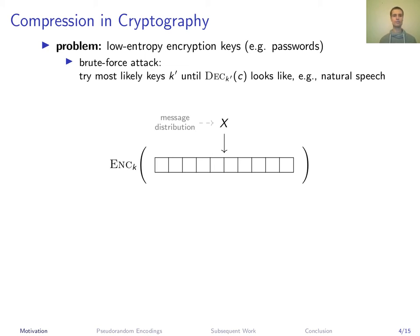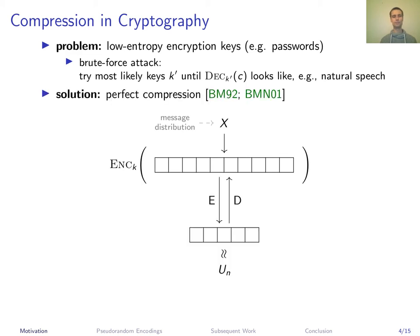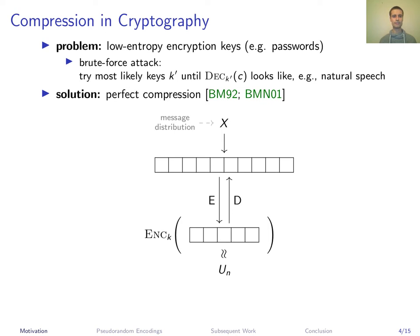A solution to avoid this was found by Bellowin and Merritt in '92 using perfect compression: first perfectly compress the plaintext and then encrypt. They used that in a password-authenticated key exchange. This way, decryption with the wrong key yields a uniform string, and decryption with the actually used key also yields a uniformly random string, so the brute force attack doesn't work anymore.